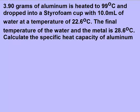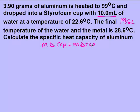Here we have 3.9 grams of aluminum and we heated it to 99 degrees Celsius. We dropped it into a styrofoam cup with 10 milliliters of water. Remember that the density of water is 1 gram per milliliter, so when they give you the volume of water, they're also giving you the mass of water. We know that we're going to be using our mΔTCp equals mΔTCp equation because we have two different substances — aluminum and water. If I only have one substance, I would just do q equals mΔTCp.